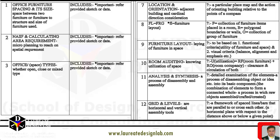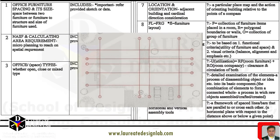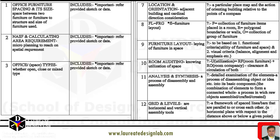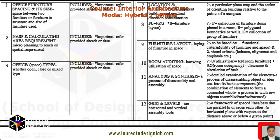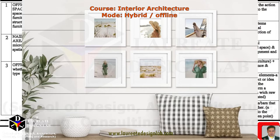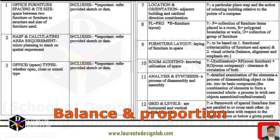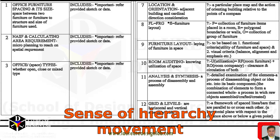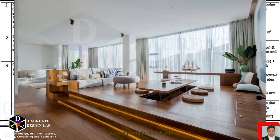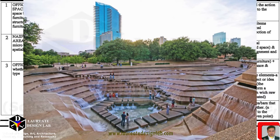Grids and Levels. A grid refers to a system of horizontal and vertical lines that organize and structure a space. In interior design and architecture, a grid can be used to create a sense of order and harmony, and to divide a space into functional areas. A grid can also be used to align elements within a space, such as furniture, artwork, and architectural features. Both grid and levels can be used together to create a sense of balance and proportion in a space, with the grid providing organization and structure and the levels adding a sense of hierarchy and movement. For example, a designer may use a grid to align furniture in a living room and use levels to create a raised platform for a seating area.